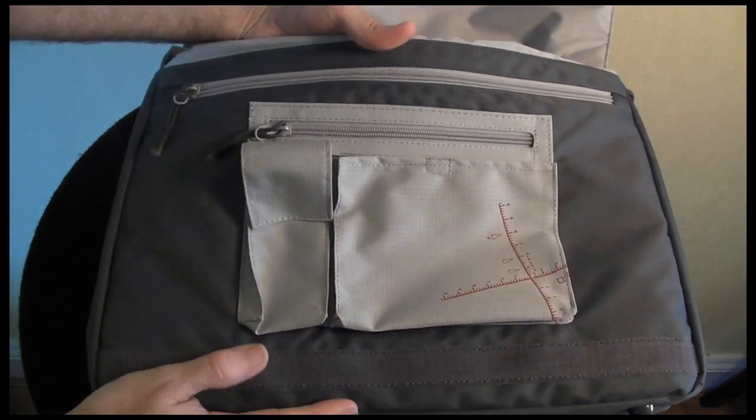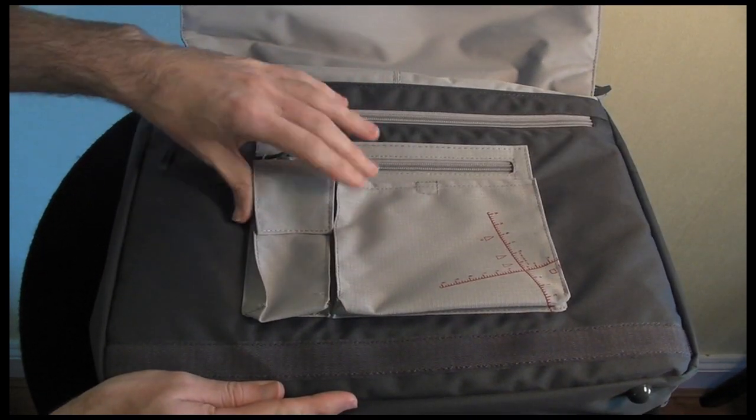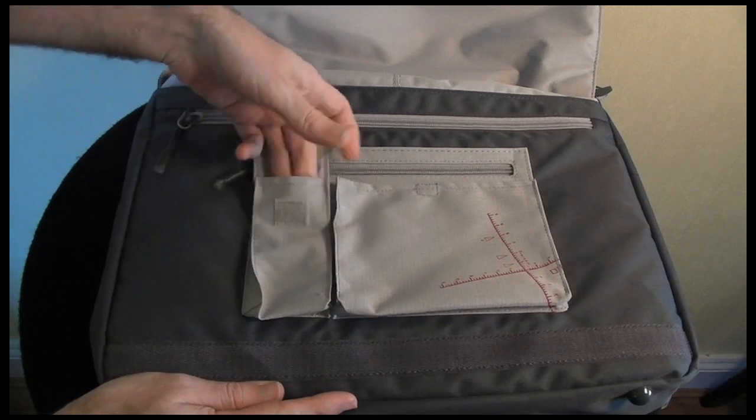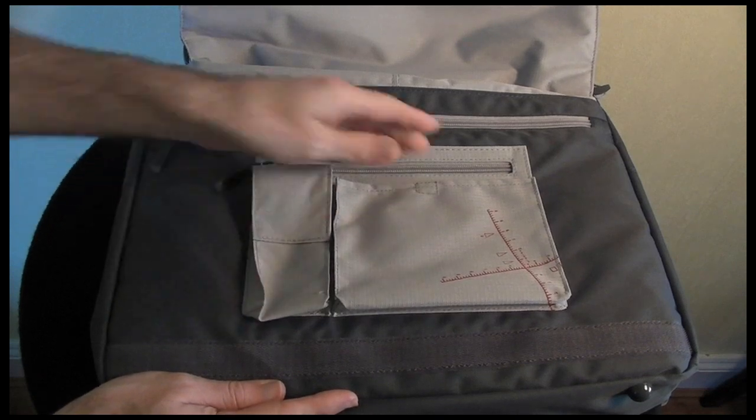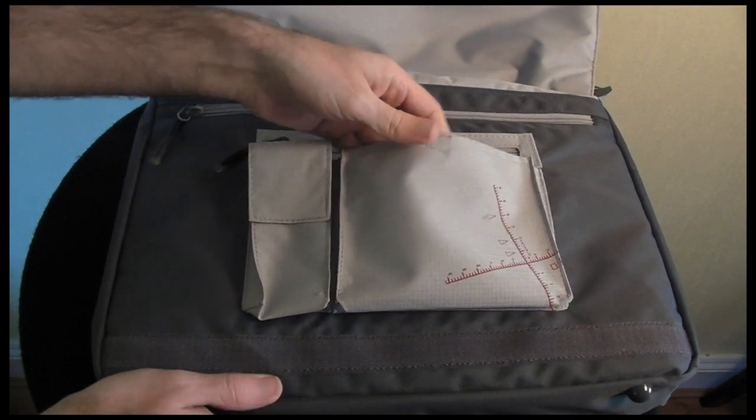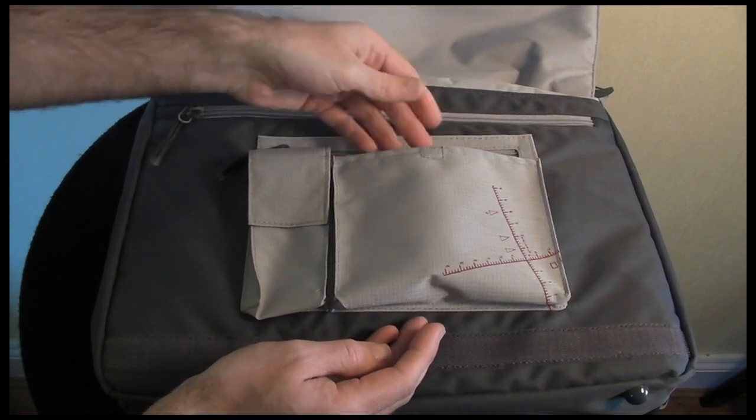The first thing you're presented with when you open up the bag is some more organisational pockets. We've got something here that is obviously designed for a mobile phone, exact shape of a candy bar style mobile. Another little velcro pocket here, just big enough for a few little accessories.